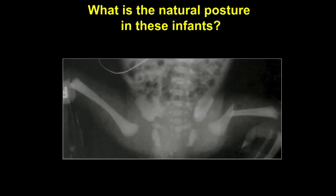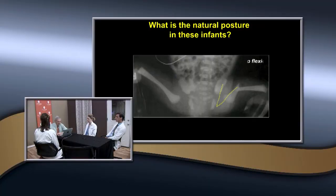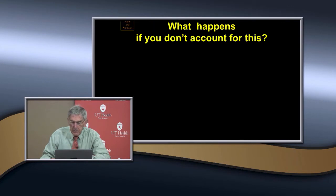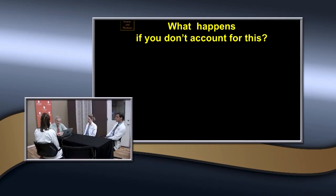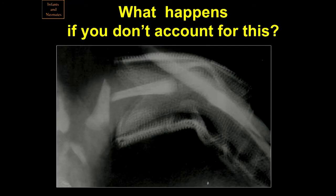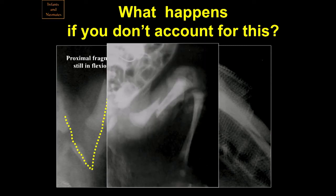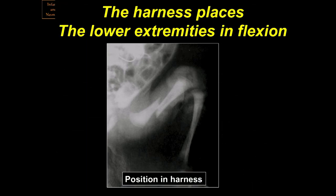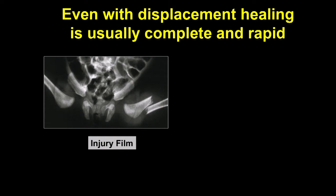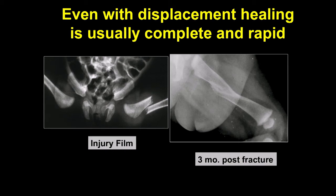The natural posture in infants is hip flexion — that's how they were in the uterus. If you don't account for that when applying a cast, you get apex anterior deformity. Here's a case where a cast was applied in the anatomical position rather than the position of flexion, and you can see the proximal fragment has externally rotated and abducted. This results in external rotation plus angulation, causing shortening, limited internal rotation, and cosmetic deformity.